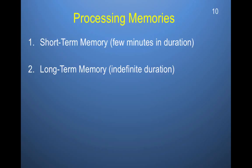When we are processing our memories, we have short-term memory. Short-term memory is just a few minutes in duration and involves the frontal lobes. This would basically be the equivalent of remembering a phone number, directions, or a shopping list — little bits and pieces of information you're trying to recall for a few minutes that you don't actually need long-term.